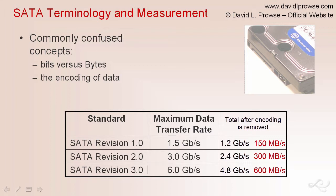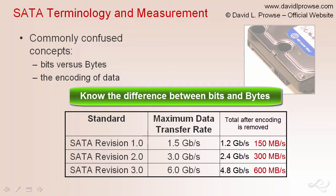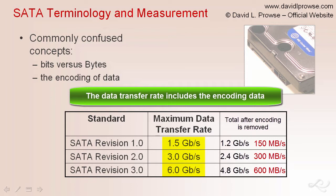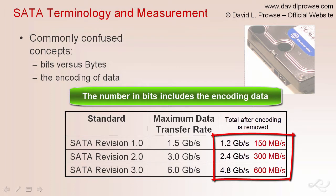In summary, make sure you understand the difference between bits and bytes: lowercase 'b' for bits and uppercase 'B' for bytes. Bits are serial — individual bits transferred one at a time. Bytes are normally 8 bits used or stored collectively. Also know that the number in bits includes the encoding data, but when the encoding data is stripped away, you end up with a lower number, which represents the actual stored data on the hard drive.